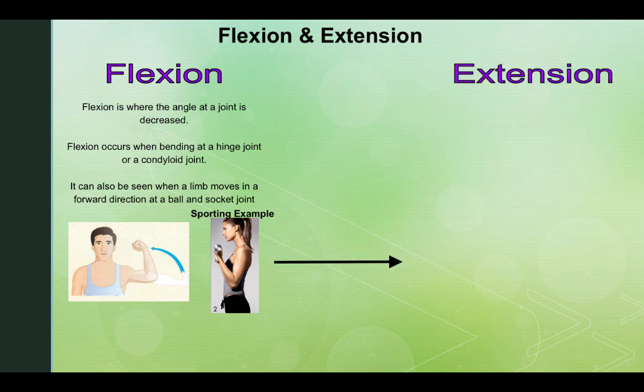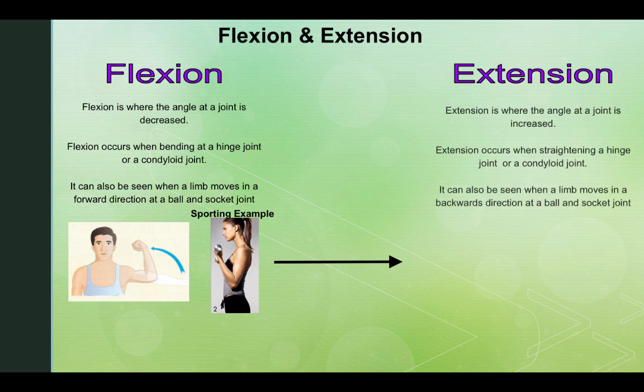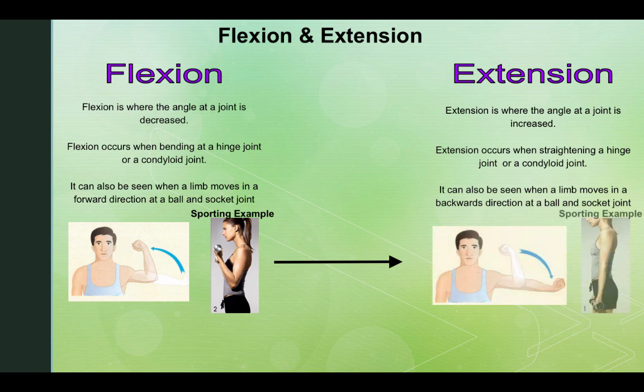The opposite of this is extension. Extension is where the angle at the joint is increased. Extension occurs when straightened at a hinge joint or a condyloid joint. It can also be seen when a limb moves in a backwards direction at a ball and socket joint. This would be the downward phase of a bicep curl.